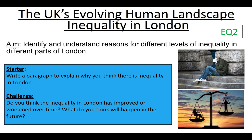Starting off today's lesson, I'd like you to write a short paragraph — two or three sentences — to explain why you think there is inequality in London. Why is not everybody the same in terms of wealth, access to education, access to services? Use an example if you can think of one; there will have been plenty in the news in the last month or year or two.